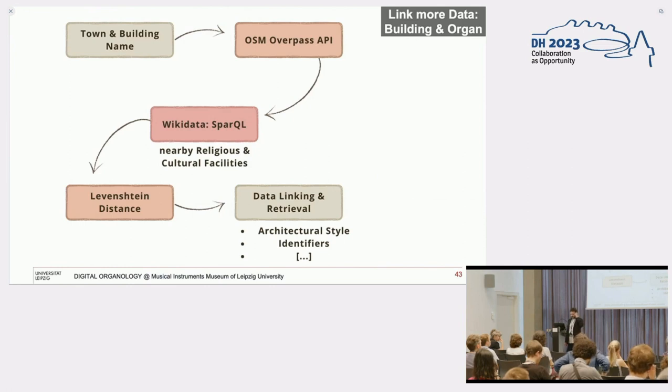Originally in this database, I just had the building name and the town name and the organ data. I wanted to know the coordinates of it. I did some queries on the OpenStreetMap Overpass API. Then I was searching for religious and cultural facilities in a radius around these coordinates. Because it doesn't always work, because churches have like the same name all the time. With the Wikidata, I was searching for the newest name of the church in the building. I could link and retrieve the data, like the architectural style of the building. We can do more analysis of like which organ is in the Byzantine architecture or just view more data.